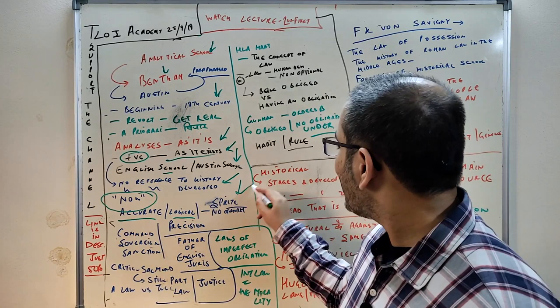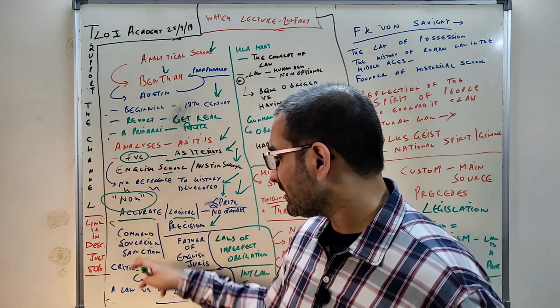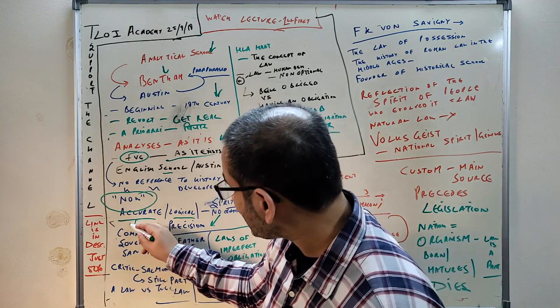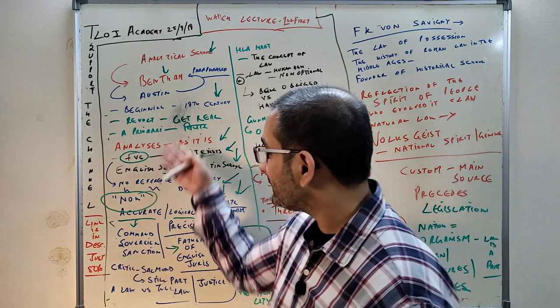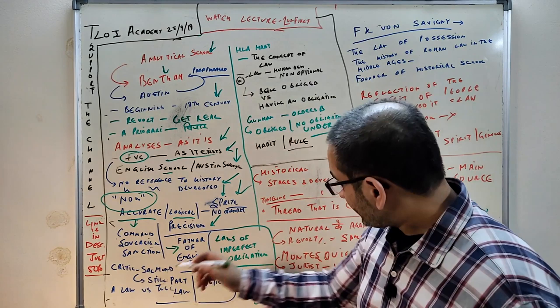As I discussed earlier, Austin had three elements of law: command, sovereign, and sanction. He was known as the father of English jurisprudence. If you want to expand, watch the previous lecture because we focus on quality not quantity here.